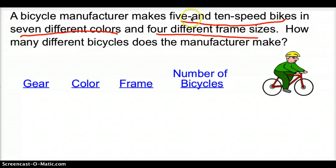How many gears can he have? He has two of those. How many colors does he have? He has seven of those. And how many frames does he make? He has four of those. Now, the fundamental counting principle tells us that we have to multiply those. So when we multiply them, the total, or how many different bicycles that the manufacturer can make is 56.